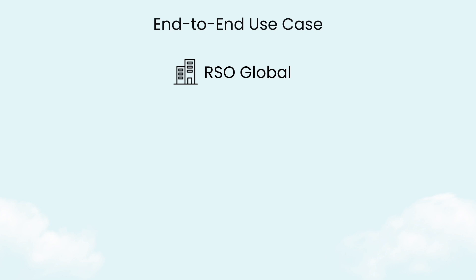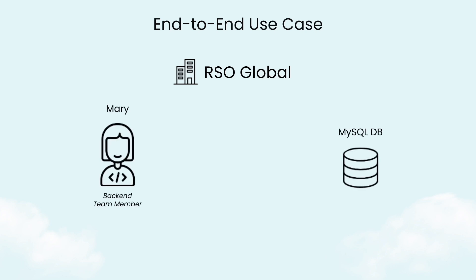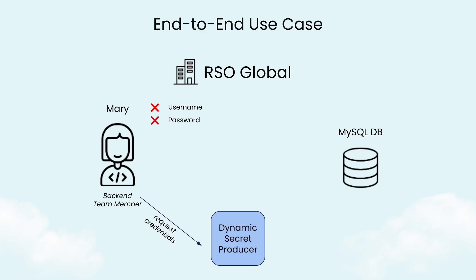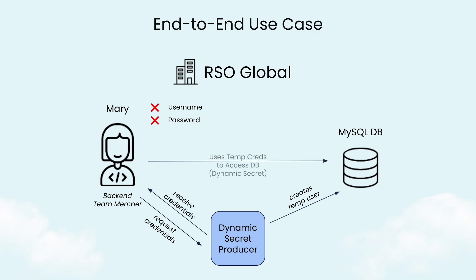Now let's take a look at how an end-to-end use case demonstrates the ideas of authorization and access we just discussed. Let's take the example of a database that needs to be updated. Mary will need to log in to MySQL to do some work updating and adding data. A best practice would be that Mary doesn't actually have a standing login and password to the database, but rather is given a temporary login and password on the fly which has enough permissions to do what needs to be done. We call this type of credential a dynamic secret, which you can learn about in more detail in another section.